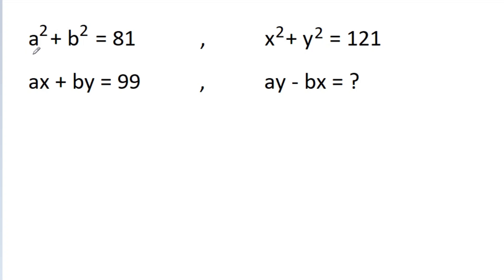In this video we have given that a squared plus b squared is equal to 81, x squared plus y squared is equal to 121, and ax plus by is equal to 99. We have to find the value of ay minus bx.